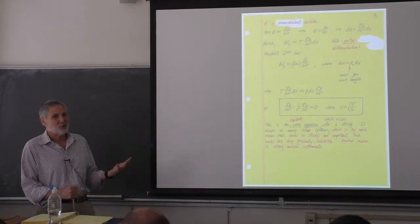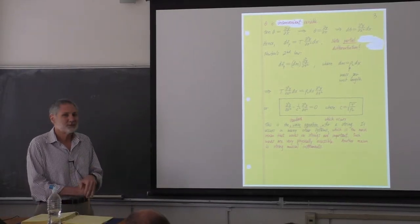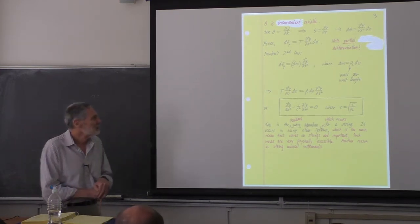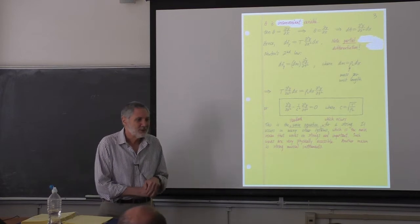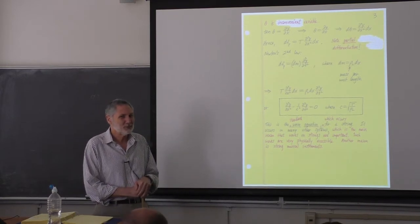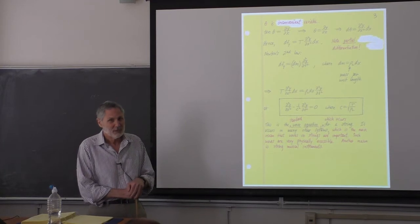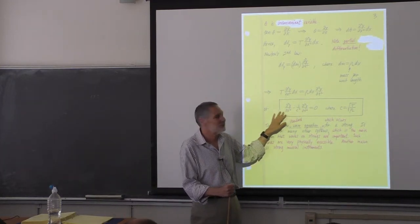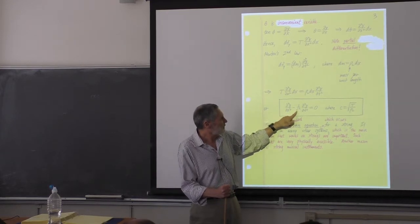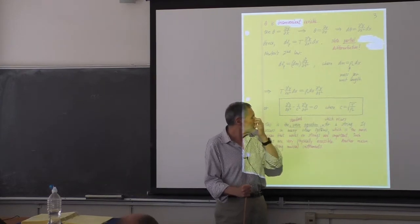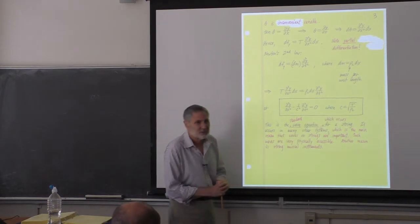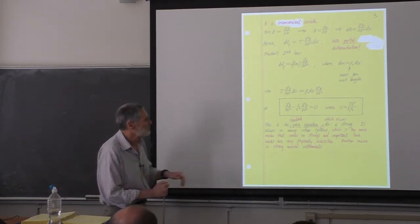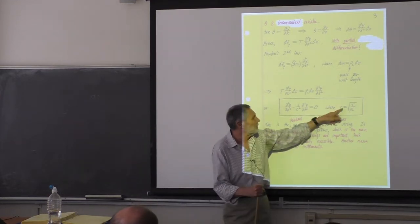Yesterday we started talking about waves, and the natural place to start was strings. By a string here, we mean a string with small amplitude and small slope. In that case we derived the standard wave equation. It depends upon one parameter, lowercase c — the square root of the tension divided by the density. We saw that this c is the speed of waves.